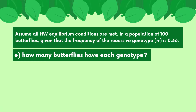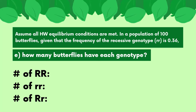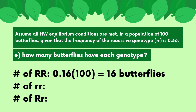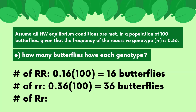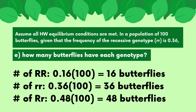Finally, the last part asks how many butterflies are in each genotype. Before, we solved for all the frequencies, but now we need to find the exact number of butterflies within each genotype. The problem tells us that the total population of butterflies is 100. All we have to do is multiply the frequency of each genotype by the total number of individuals in the population. We find that there are 16 butterflies with genotype RR, 36 butterflies with genotype rr, and 48 butterflies with the heterozygous genotype Rr.